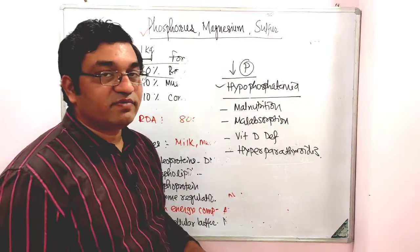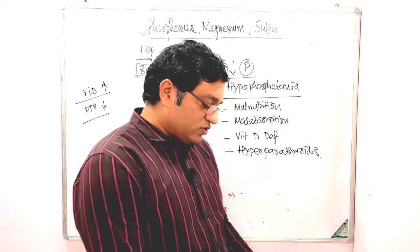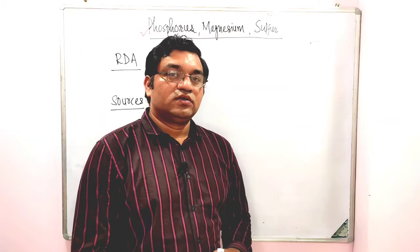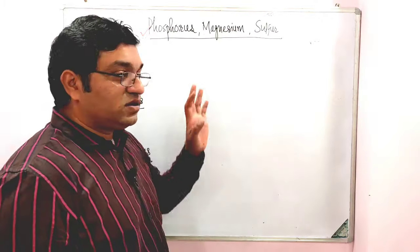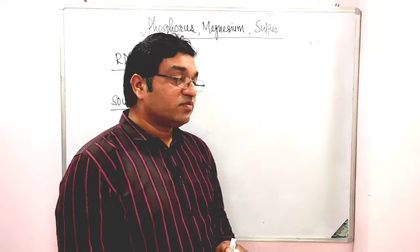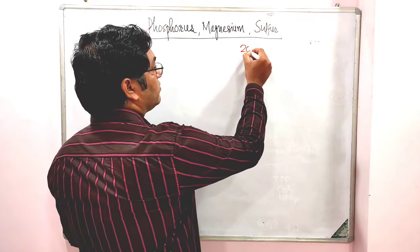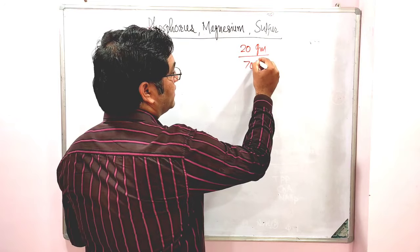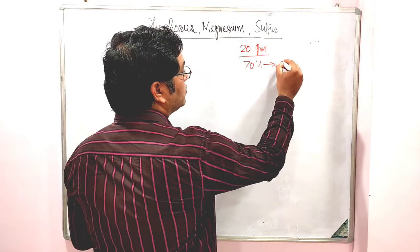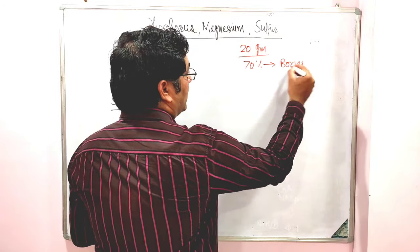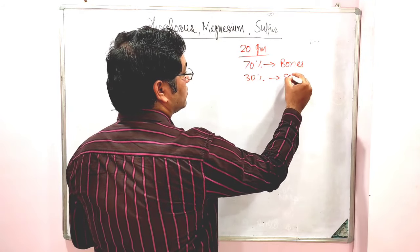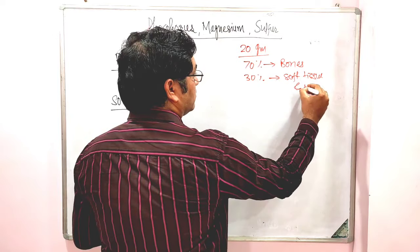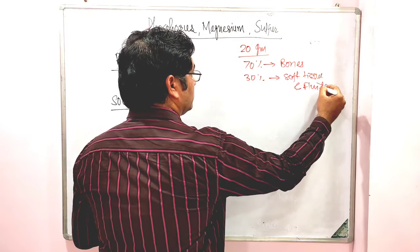Now coming to the discussion of the next mineral, that is Magnesium. The total body content of Magnesium is near about 20 grams. Of this, 70% is mainly present in bones, and 30% is present in soft tissues and fluids. The RDA of Magnesium is 350 mg in case of males and 300 mg in females. Sources are mainly vegetables, then milk, meat, and cereals.